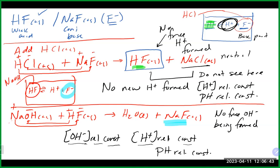The way a buffer is able to function is because it has an acid part and a base part. It is able to prevent the formation of free H⁺ or free OH⁻. By preventing those from being formed, it keeps those concentrations constant and also keeps our pH from going crazy.